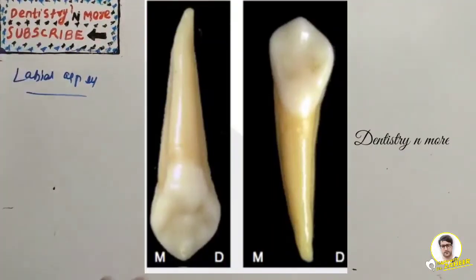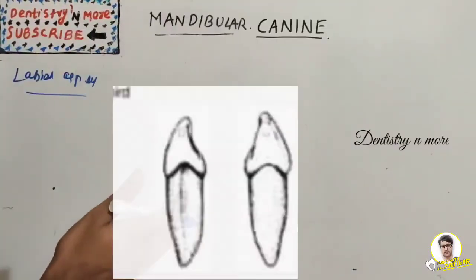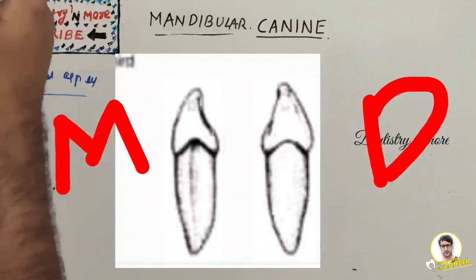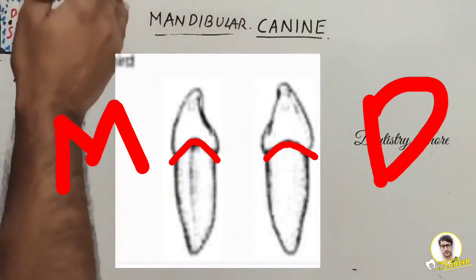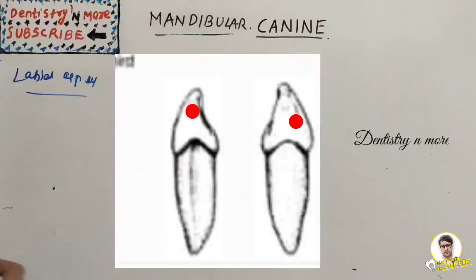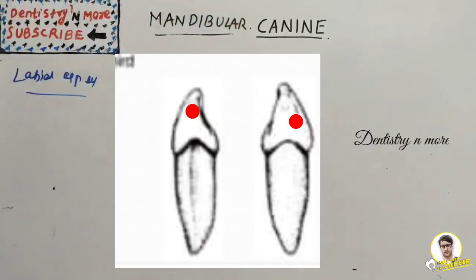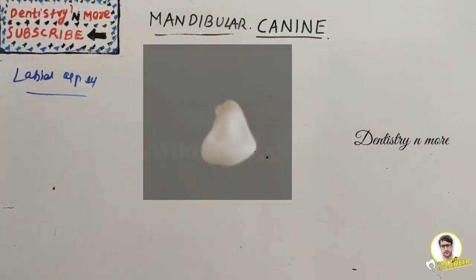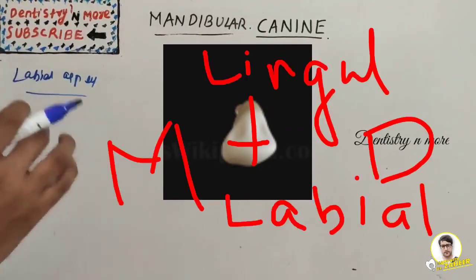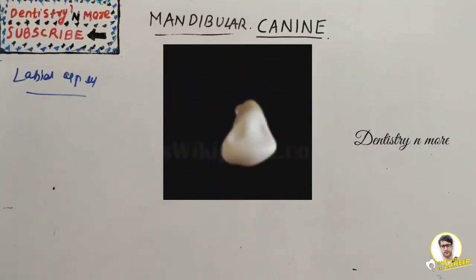For the mesial and distal aspects: these are very similar to each other, and the cervical line curves more on the mesial aspect than the distal — mesially there is more curvature. The contact area on the mesial aspect is in the incisal third, and slightly more cervical on the distal third. This follows the common rule for all teeth. For the incisal aspect, just like the maxillary canine, the labio-lingual dimension is more than the mesio-distal dimension, and the cusp tip appears inclined in a lingual direction.